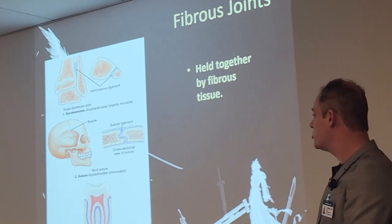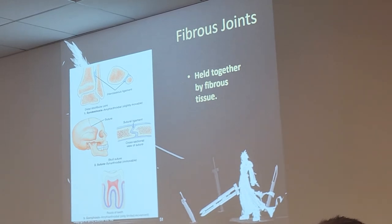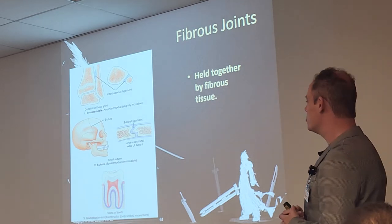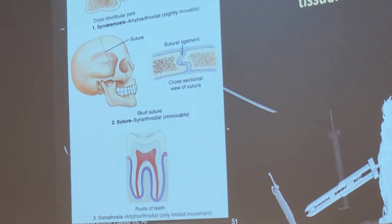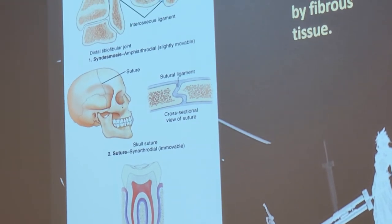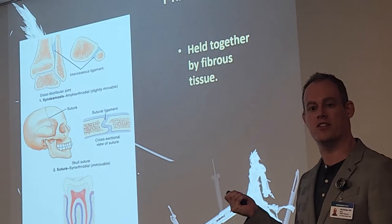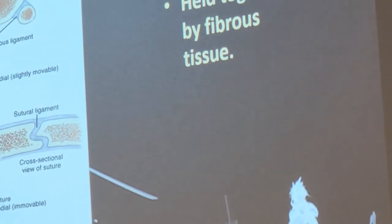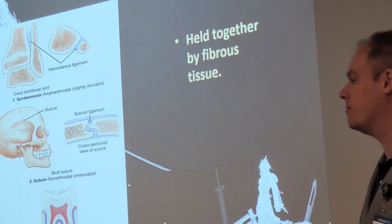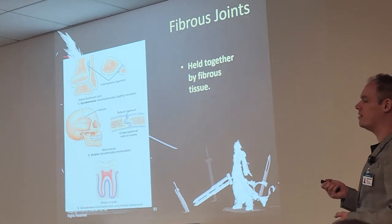Here are a few examples of fibrous joints. The sutures in the skull are a prime example — we don't want our skull shifting around. Same with the roots of your teeth; hopefully your teeth aren't falling out. There's also one we'll talk about this semester — the distal tibiofibular joint that connects the tibia and fibula together. That's one of the few fibrous joints we'll cover this semester. That joint does not move at all, even though you can move your ankle — that's multiple joints coming together. The joint between the tib and fib is fused; it cannot move.